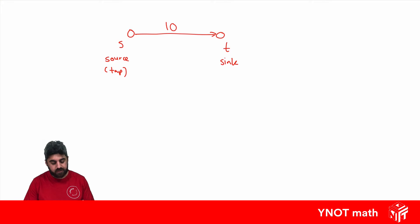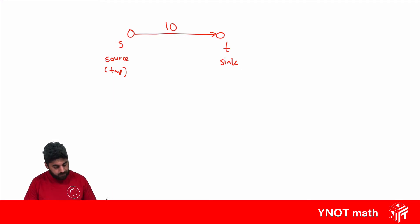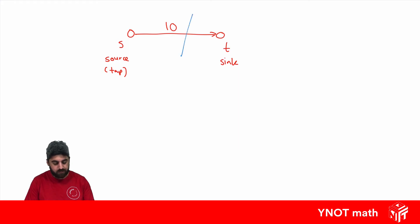Along this pipe we've got a flow of 10 milliliters a second. We're going to look at making cuts in our network which will separate our source from our sink. This would be an example of a cut that separates our source and sink.